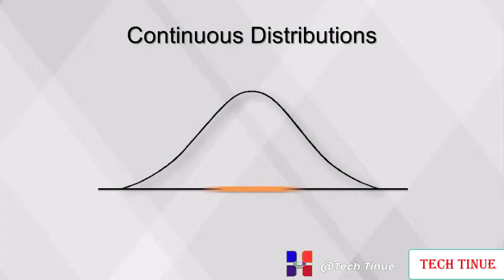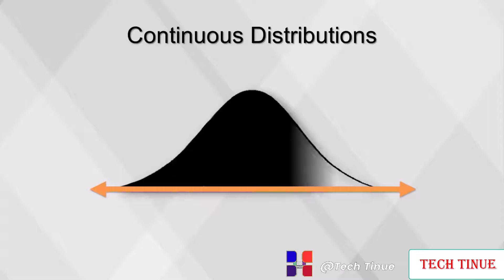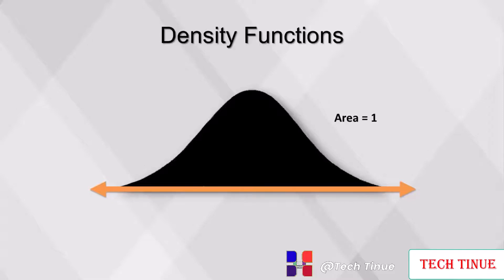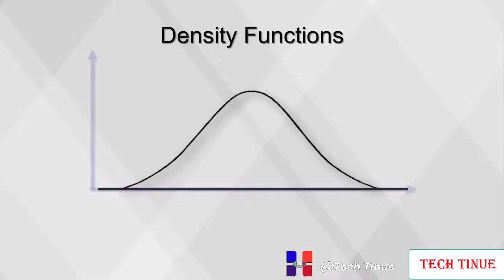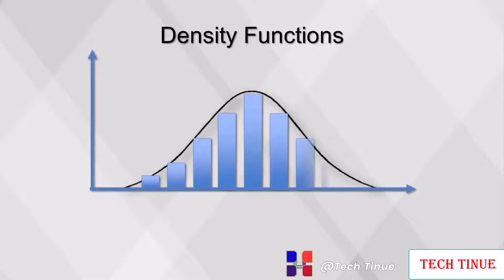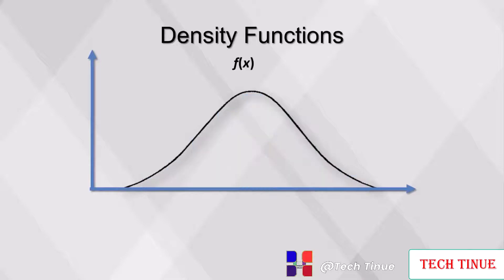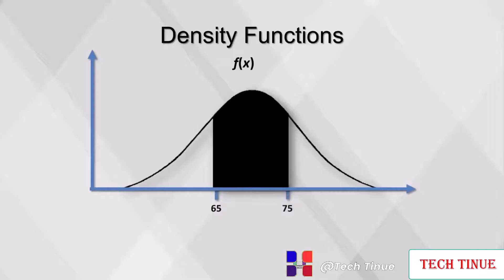With continuous variables, there is a continuum of possible values, such as all values between 0 and 100. Instead of assigning probabilities to each individual value, the total probability of 1 is spread over the continuum — thus the shaded area within the bell curve will always have an area of 1. The key to this spreading is called a density function, which acts like a histogram. The higher the value of the density function, the more likely this region of the continuum is. A density function, usually denoted by f(x), specifies the probability distribution of a continuous random variable x. Probabilities are found from a density function as areas under the curve — for example, the shaded portion under this bell curve represents the probability of x being between 65 and 75.